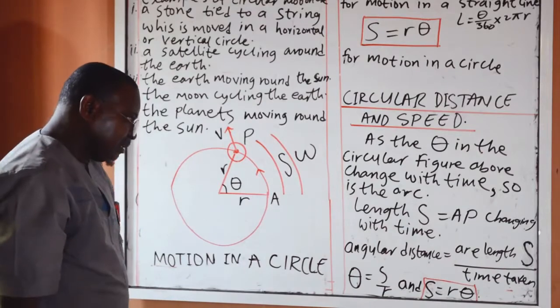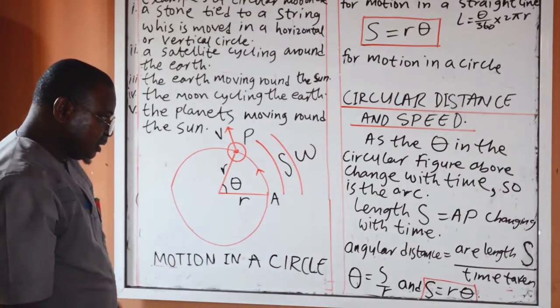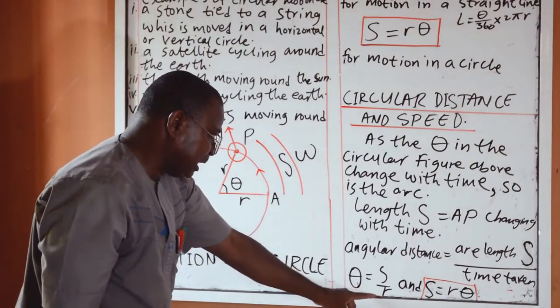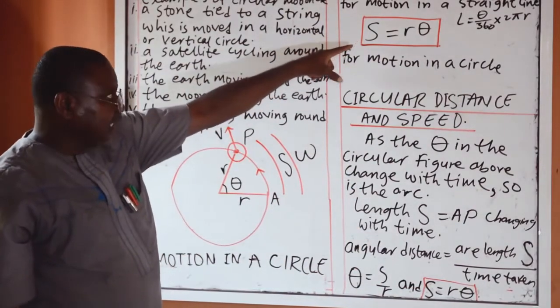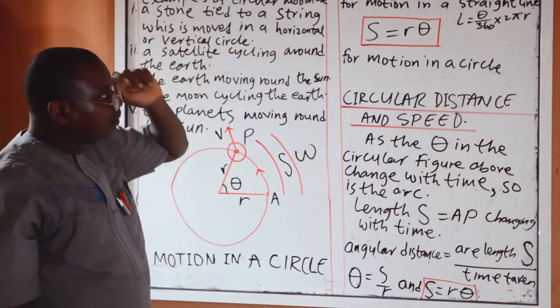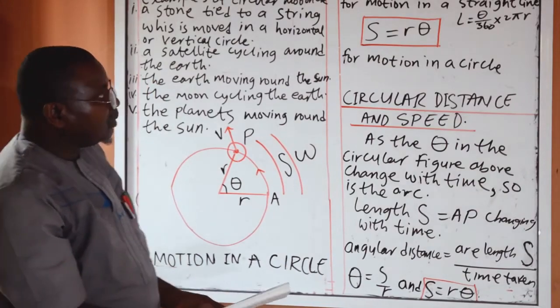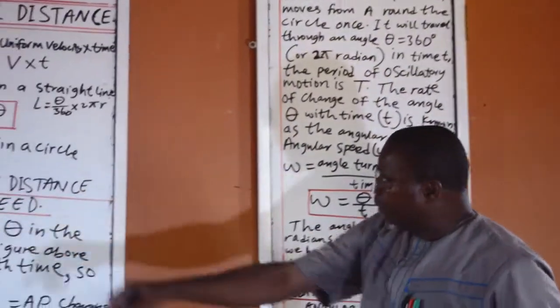Angular distance is given by arc length s divided by radius. Which is theta, theta is equal to s over r and s is equal to r theta, which we got before. So, now, that is that, we note from the diagram above.